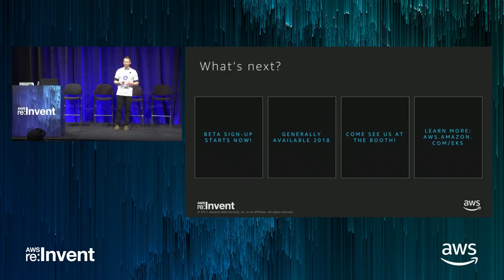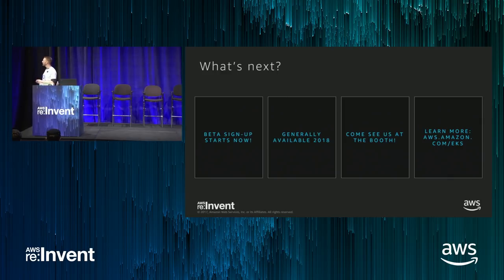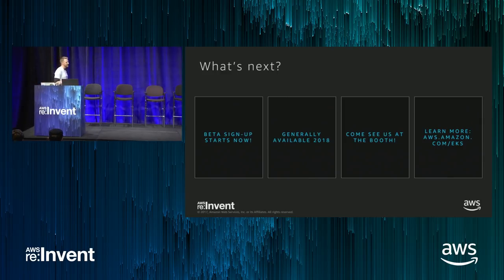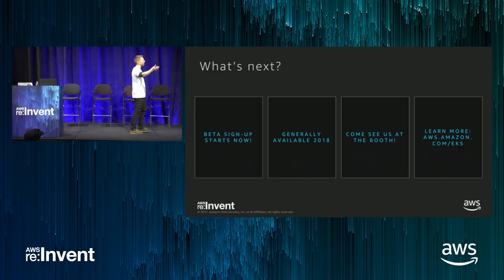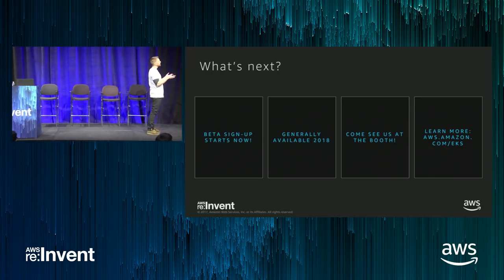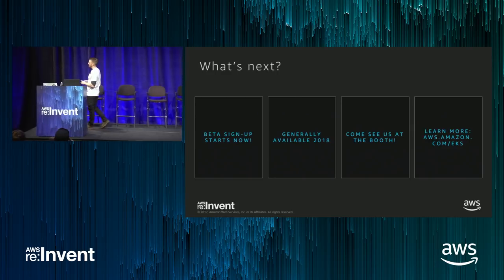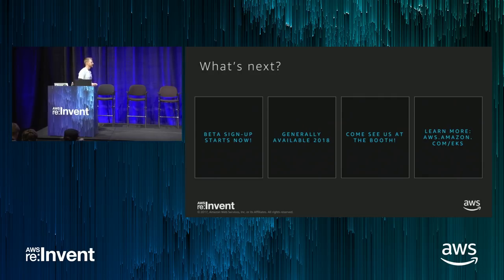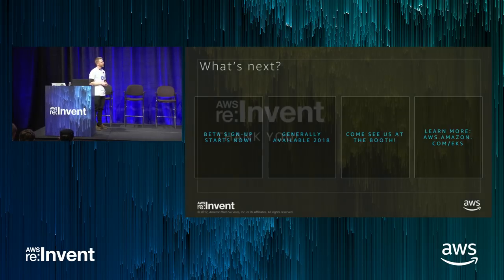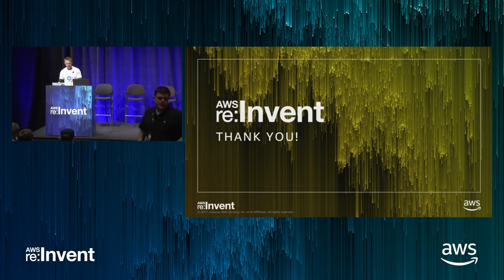That's about it for me. Beta signup starts now. If you haven't already been talking to us about the beta, a reasonable expectation is early 2018 to get access. We're rolling this out like a typical Amazon beta — starting small and gradually rolling it out. This service will be generally available and ready for production workloads in 2018. If you want to learn more, you can come talk to the folks at the AWS booth or go to aws.amazon.com/eks for additional details. Thanks so much!